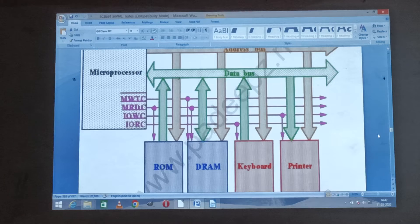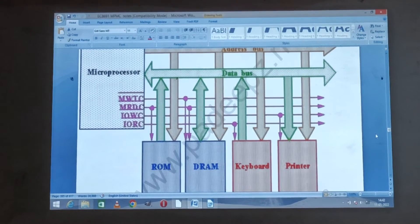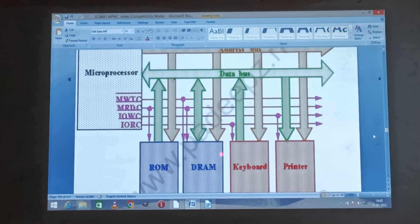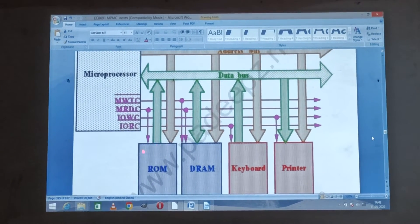Two types of memory are available in the microprocessor: ROM and RAM. ROM is read only memory and RAM, the dynamic RAM, random access memory is used in the memory interfacing circuit.